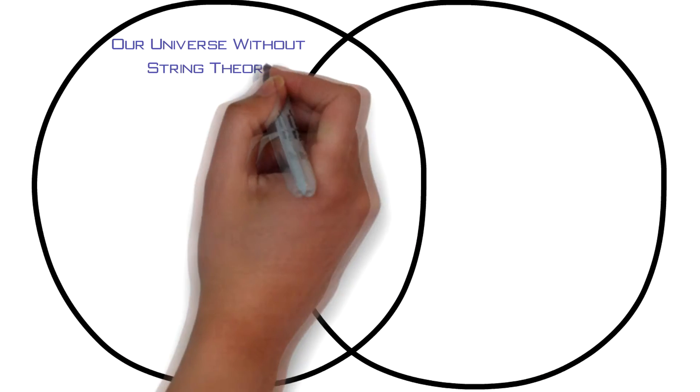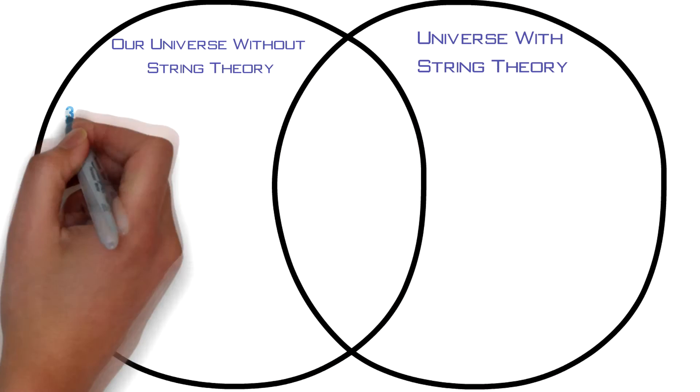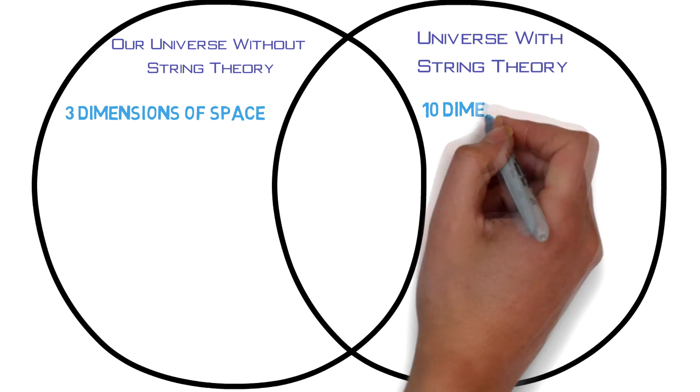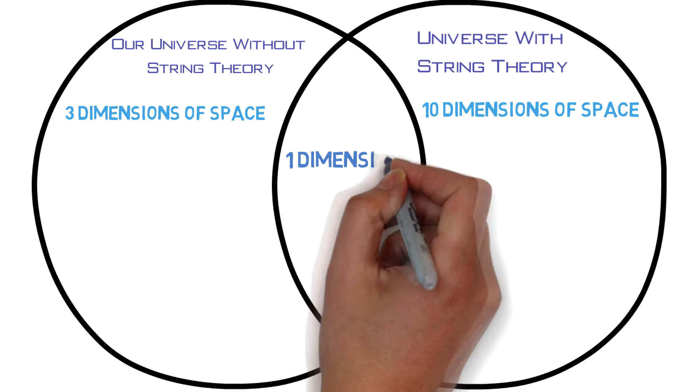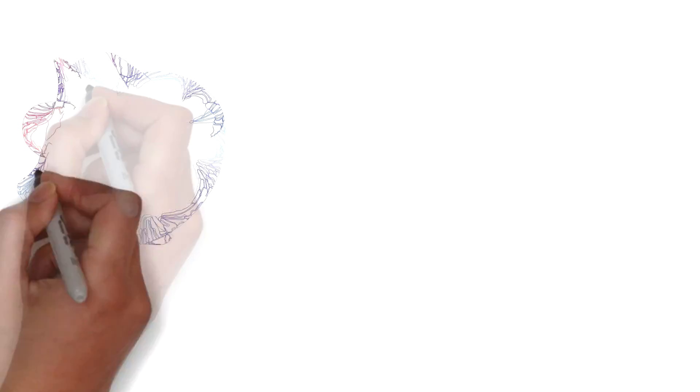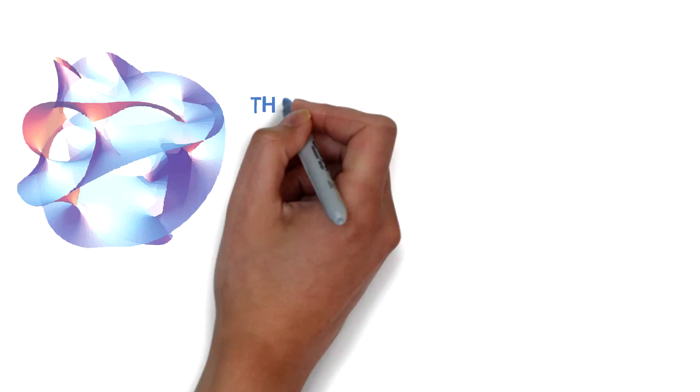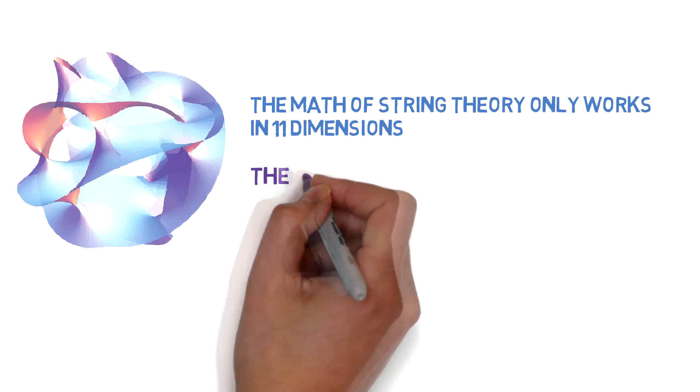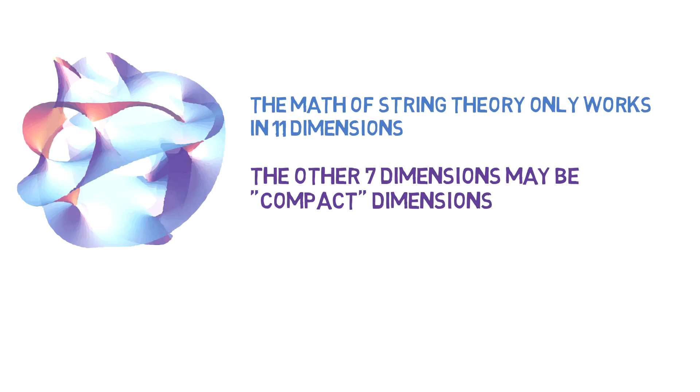We think of our universe as having four dimensions, three space dimensions and one time dimension. However, string theory requires eleven dimensions, ten space dimensions and one time dimension. What? How does that work? One explanation is that these extra dimensions are so small, we can't see them or detect them. It is believed that these dimensions are curled up.